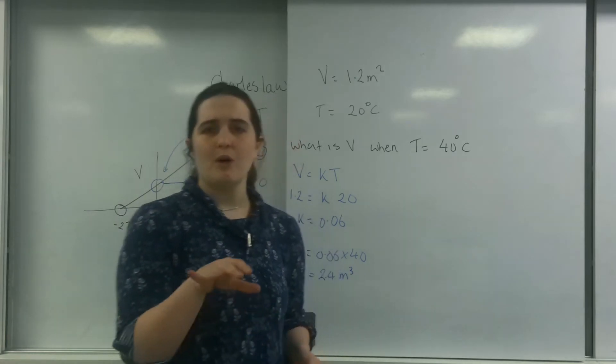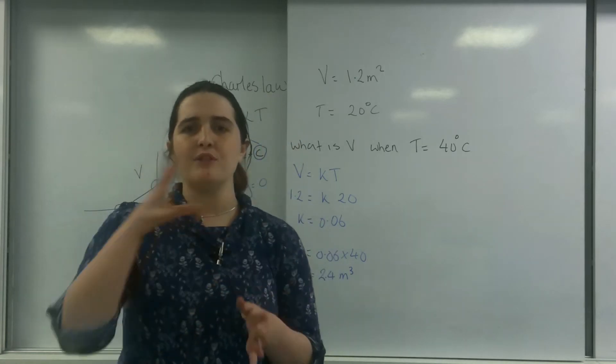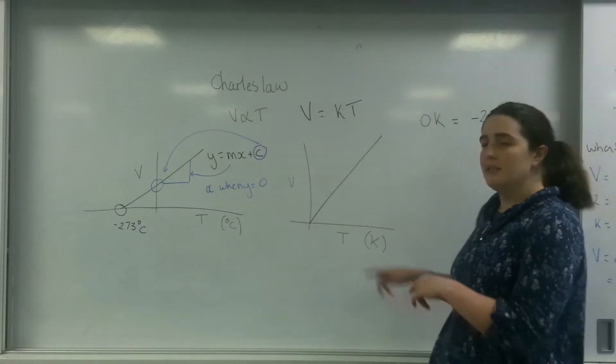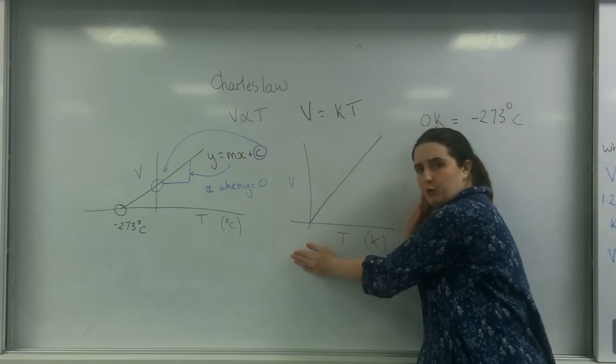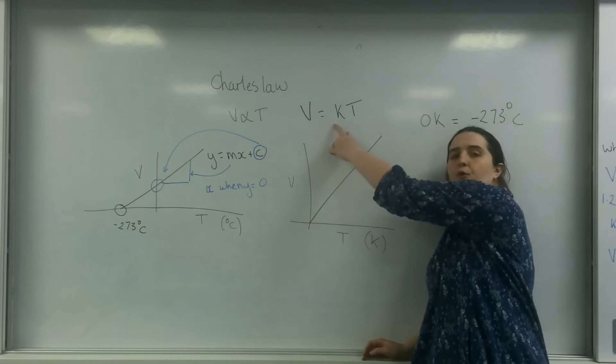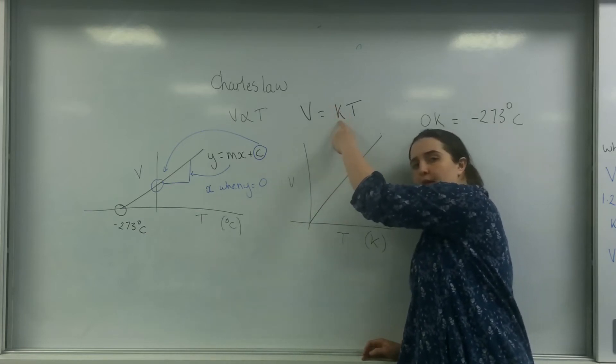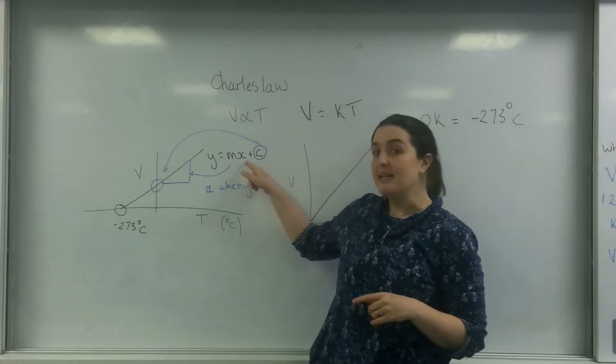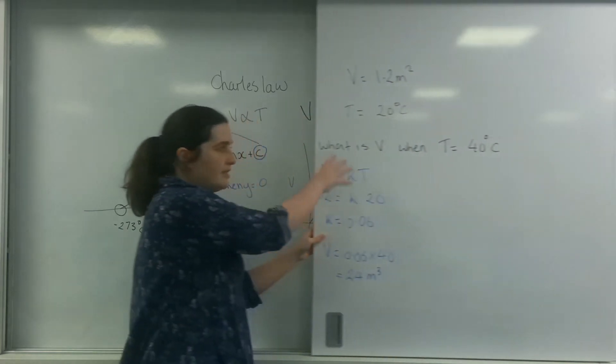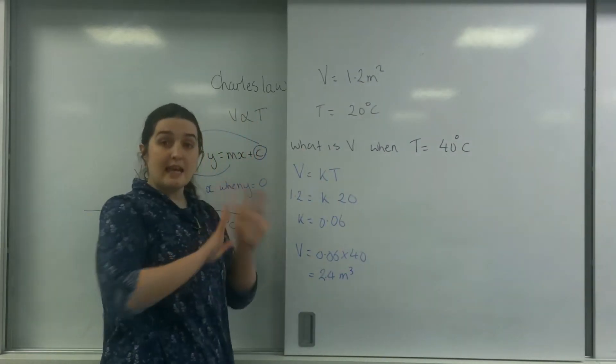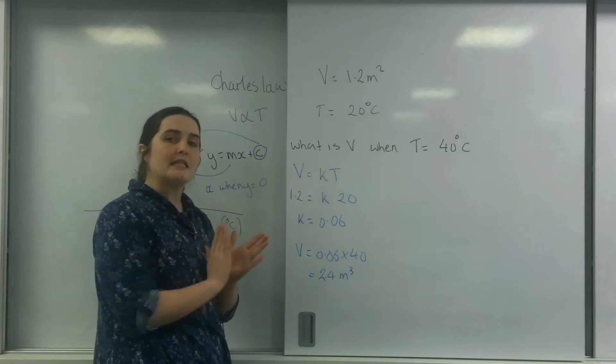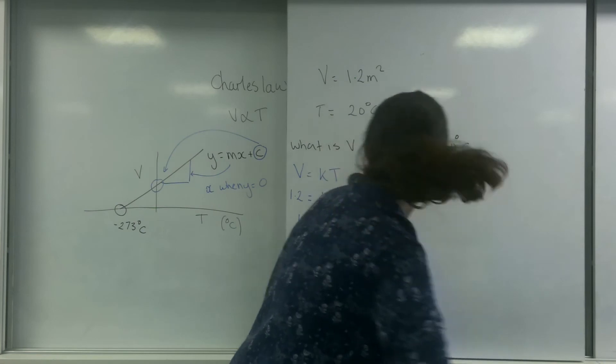And what is important, why this doesn't happen, why we have to use Kelvin, is going back to these graphs here. This graph is directly proportional because the intercept is at zero. This formula is a directly proportional formula. This one is not. So this means that this is incorrect. I cannot use the directly proportional formula when I'm with degrees C.